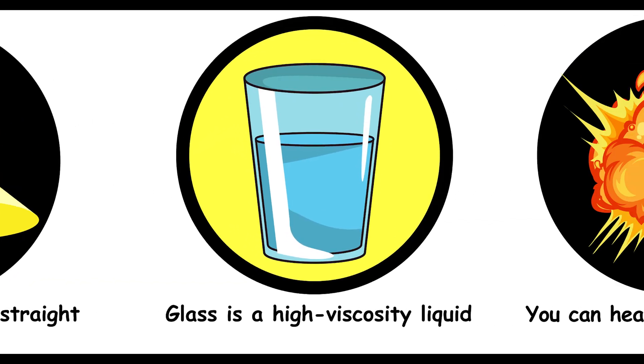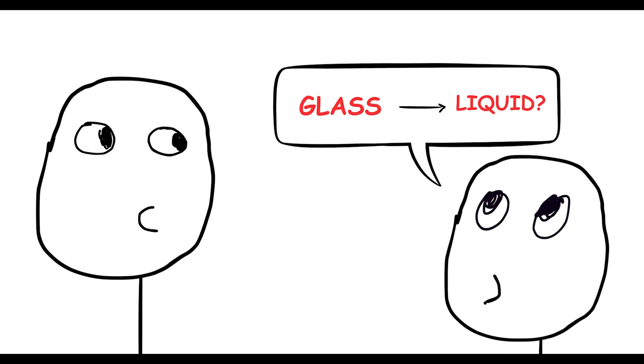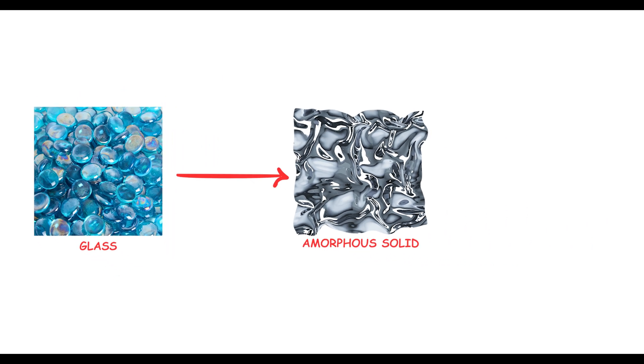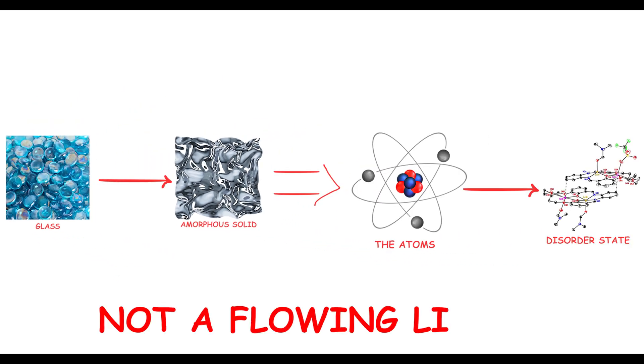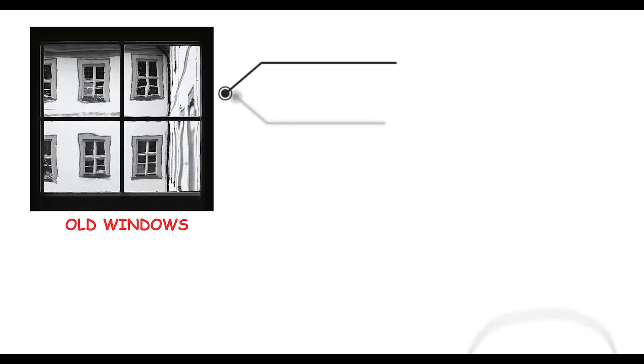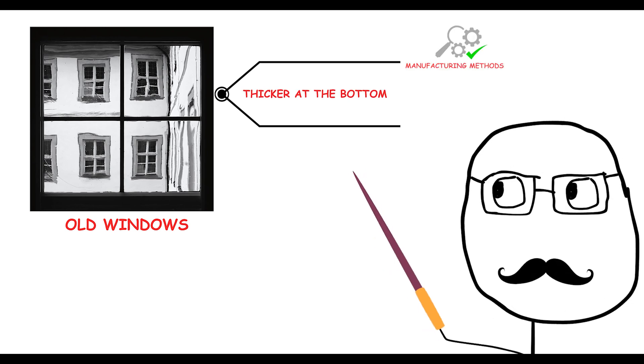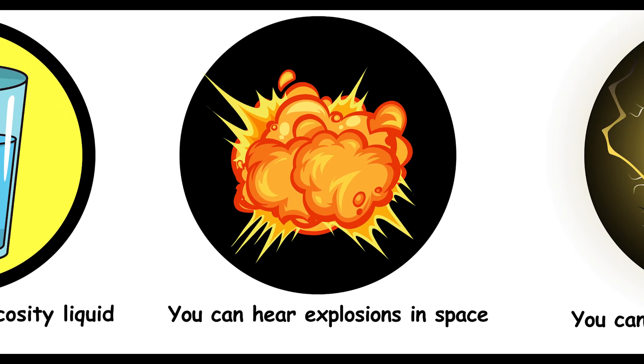Glass is a high-viscosity liquid. Believe that glass is a high-viscosity liquid? It's actually a solid. Glass is an amorphous solid, meaning its atoms are in a disordered state, not a flowing liquid. Old windows appear thicker at the bottom due to manufacturing methods, not flow. So your windows are solidly in place, no matter their age.